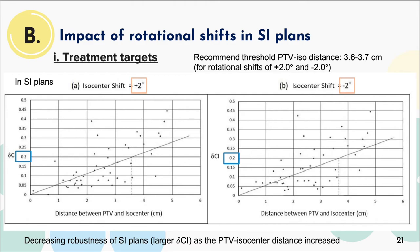The graphs show generally a pattern of decreasing robustness of SI plans as the PTV-isocenter distance increased. Regression lines indicated a recommended threshold distance of 3.6 to 3.7 centimeters for 2 degree shifts, assuming a maximum allowable change of CI of 0.2. Using the SI approach, a small angular error could result in considerable dosimetric degradation, particularly for small targets situated further away from the treatment isocenter.